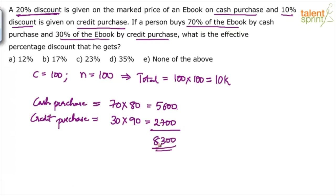Now compare. 10,000 becomes 8,300. How much is the discount? 1,700. 1,700 on 10,000 is 17 percentage. So answer should be option B.